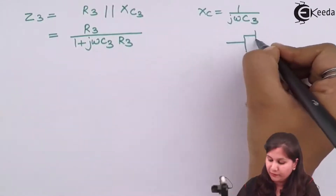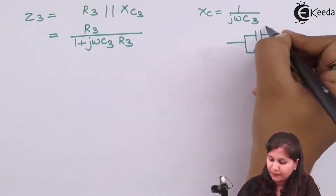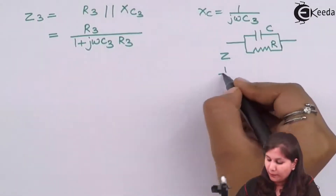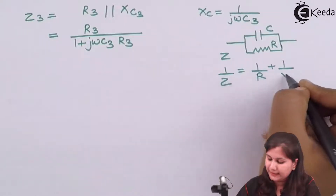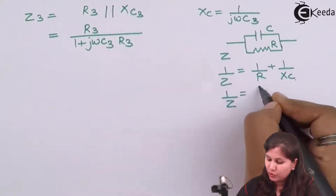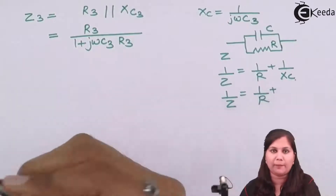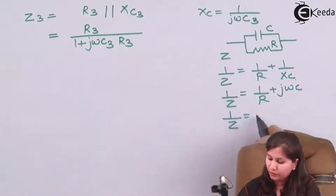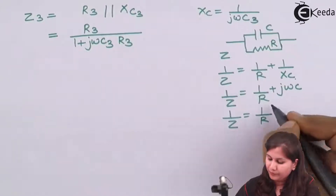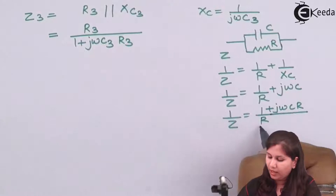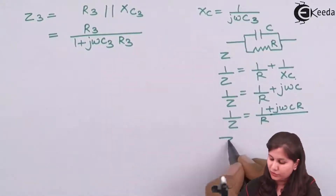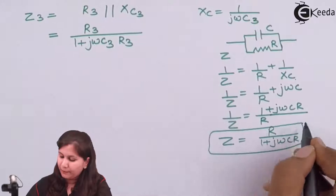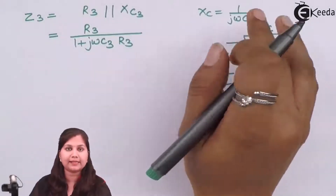To derive this, for a general parallel R-C circuit: 1/Z = 1/R + jωC, so 1/Z = (1 + jωCR)/R, and therefore Z = R/(1 + jωCR). This is how a parallel combination of resistance and capacitance is solved. Here we simply replace R with R3 and C with C3.